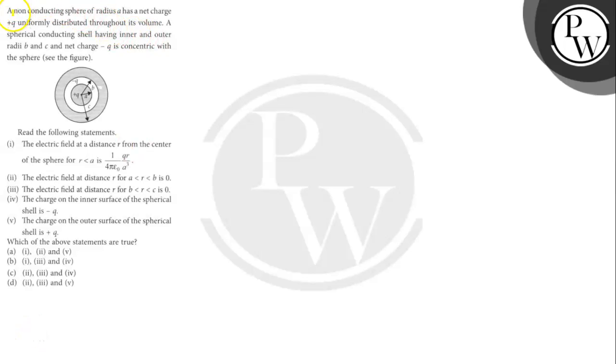Hello, let's read the question. The question says a non-conducting sphere of radius A has a net charge plus Q uniformly distributed throughout its volume. A spherical conducting shell having inner and outer radii B and C and net charge minus Q is concentric with the sphere.